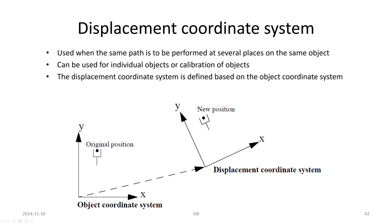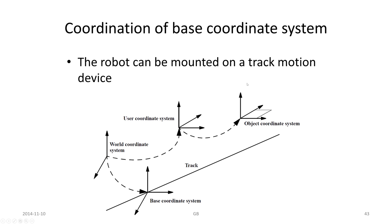Then we can have displacement coordinate systems if you want to be able to recalibrate the position of objects, maybe a new orientation and so forth. And we can also have frames related to moving frames that reflect a track motion device.